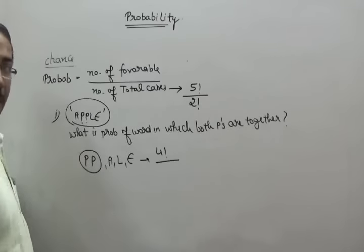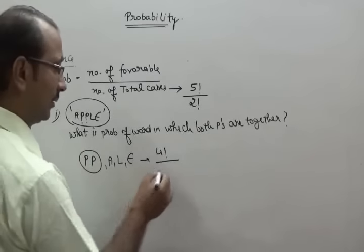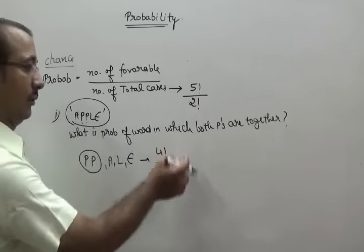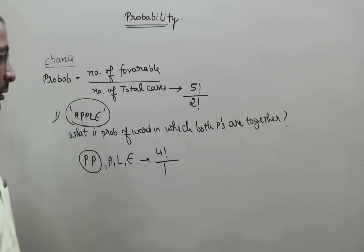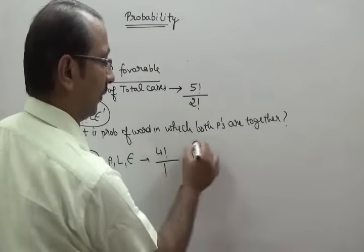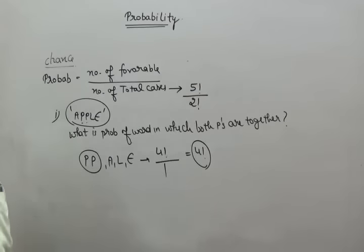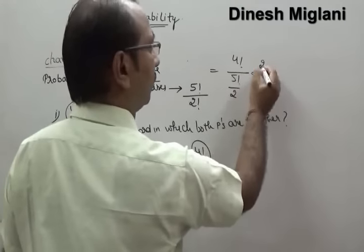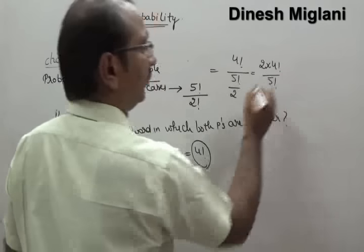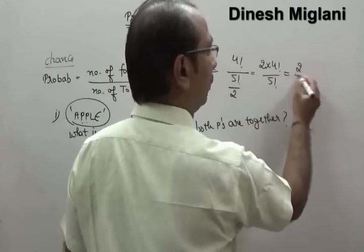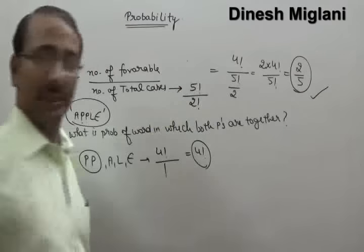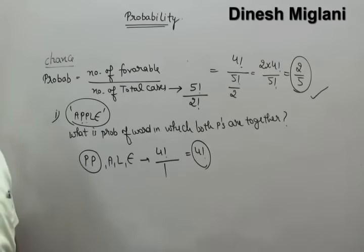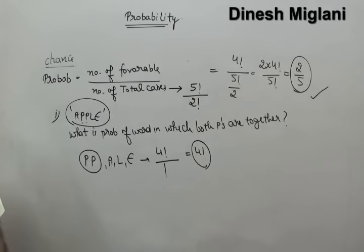The two P's are part of a single group, so internally that is 2 factorial upon 2 factorial = 1. My number of favorable cases is 4 factorial. So the probability = 4 factorial divided by (5 factorial / 2) = 2 × 4 factorial / 5 factorial = 2/5. The probability of getting a word where both P's are together is 2 upon 5.